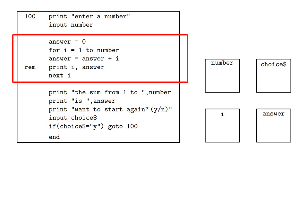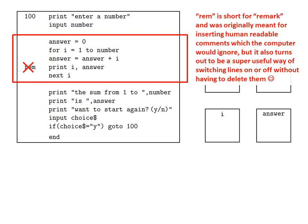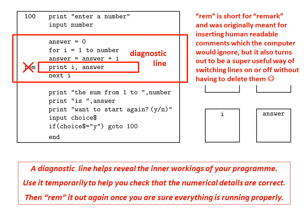Now let's take a closer look at this middle block of code where the computer actually performs the computation. To make things easier for us humans to see what is going on, let's delete off this REM command. REM is short for remark and was originally meant for inserting human readable comments which the computer would ignore. But it also turns out to be a super useful way of switching lines on or off without actually having to delete them. Deleting this REM activates the line print i answer, turning it into what is called a diagnostic line. A diagnostic line helps reveal the inner workings of your program.